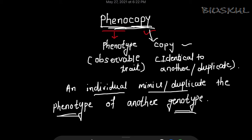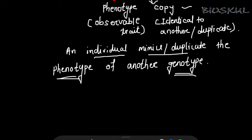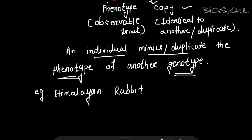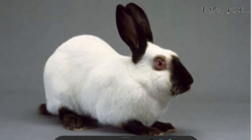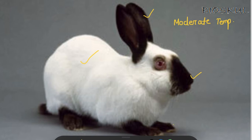Let's understand phenocopy by taking examples. The first example is the Himalayan rabbit. In moderate temperature, the body coat color is white, but the color of ears, nose, toes, and tail are black.